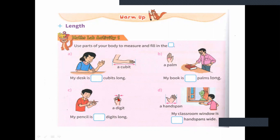A digit is nothing but a finger — one finger, like the fourth finger. This is called a digit. You can measure a pencil with this.